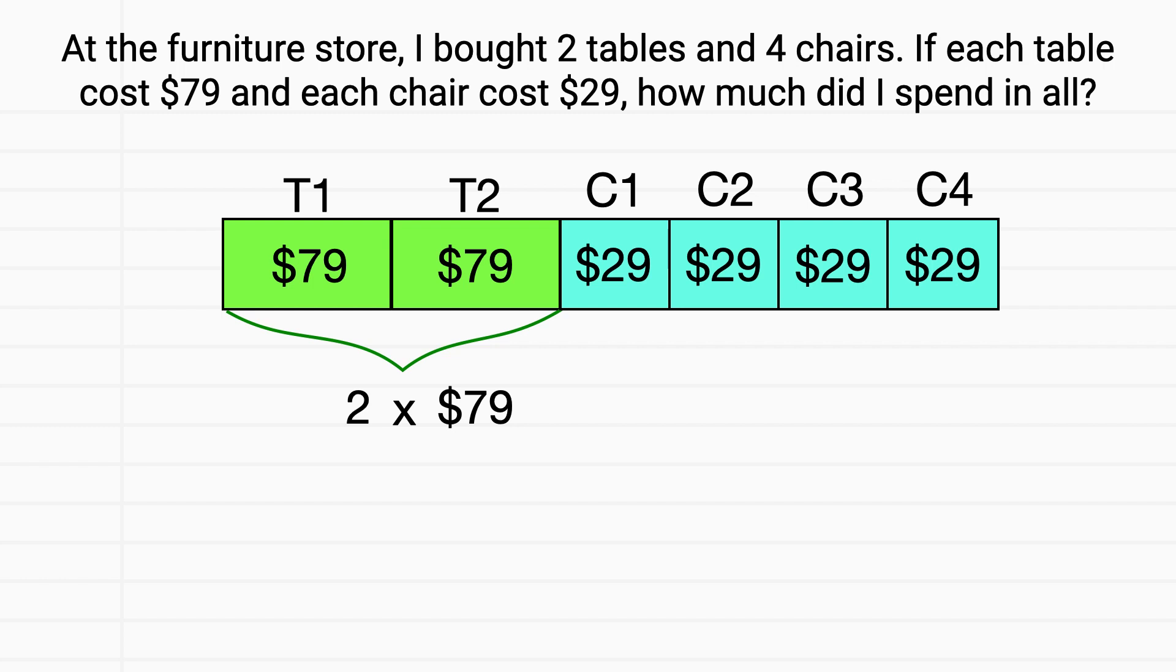I can multiply 2 times 79. For my chairs, I bought four chairs, and each one cost $29. So I'll multiply 4 times 29.